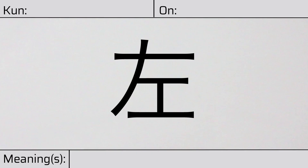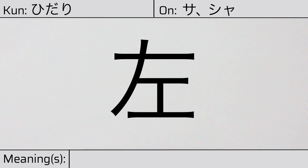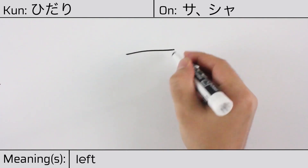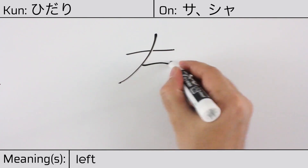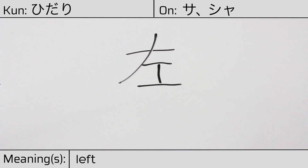Welcome to this lesson on Japanese kanji. Today, we'll be discussing this character. This kanji has a kunyomi or Japanese reading of hidari, and it has onyomi or Chinese readings of sa or xia. This character has the meaning left. Here is the stroke order. This character is made up of the following radicals or parts.